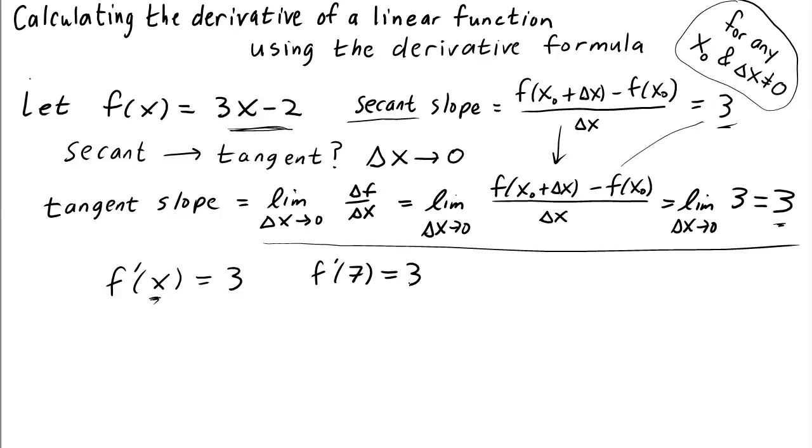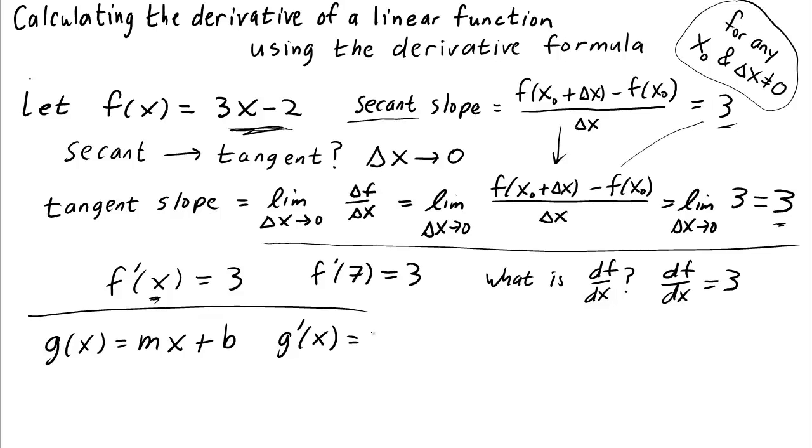The derivative of a linear function is a constant independent of x. So for this f, what is df dx? It's another way of writing the derivative. So df dx is just 3. So you'd be okay if I gave you the function, let's say, g of x is equal to mx plus b, for some numbers m and b, but I'm not going to tell you what they are. Could you then calculate what the derivative g prime of x is? It's just the number m, the slope m, a constant independent of x.